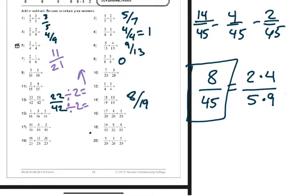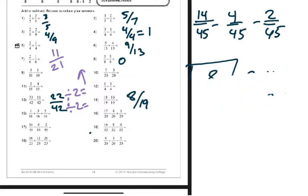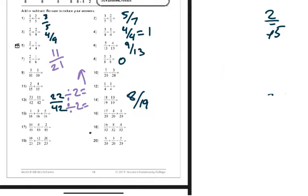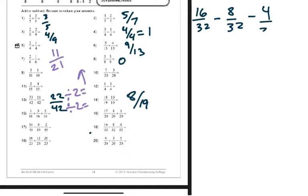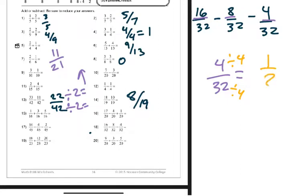Number eighteen: sixteen over thirty-two minus eight over thirty-two minus four over thirty-two. Because the denominators are the same, we can just subtract. Sixteen minus eight is eight, eight minus four is four, so we're at four over thirty-two. Both are divisible by four, and this breaks down to one over eight.